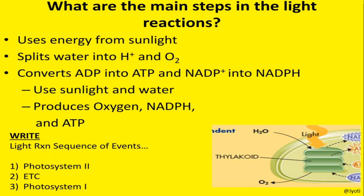The light reaction involves a sequence of events taking place in photosystem 2, the electron transport chain (ETC), and photosystem 1. This is a picture of a chloroplast showing the grana. The individual coin-like structure is called a thylakoid. The light reaction occurs on the exposed membrane of the thylakoid, where water and light are utilized, and NADPH, ATP, and oxygen are released.